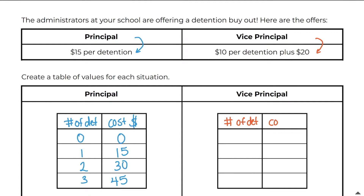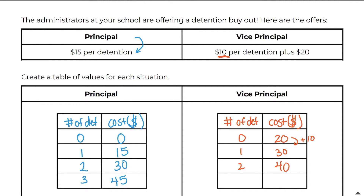For the vice principal, zero detentions still costs $20 due to the initial fee. You'd use this deal if you expect to get a lot of detentions, since it's less per detention. The cost goes up by $10 each time: one detention is $30, two detentions is $40, three detentions is $50. If you don't get detentions often, the principal's plan is better since there's no initial fee.